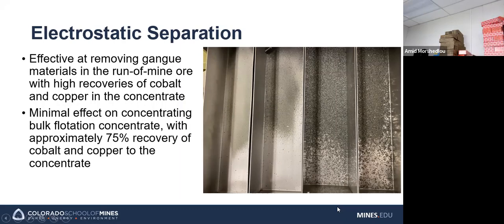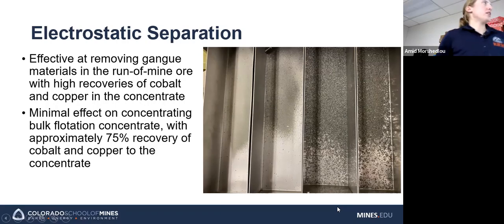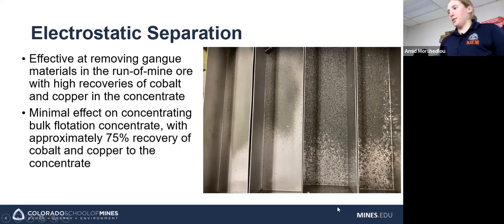So in this image, these are the four steps, I guess you could say, of the electrostatic separation. And in this experiment, the far three buckets were considered concentrate, and the far left one was considered the tailings. And as you can see, the material gets progressively lighter as it moves more towards the tailings, which was about expected.